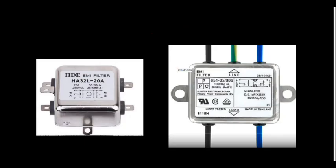This one is the EMI filter — usually we simply call it a line filter. See here, it has got input and output. These two are the input lines, and on this side the output load is connected. So this is an EMI filter, or simply a line filter. It usually has two inputs, two outputs, and one body connection to earth.